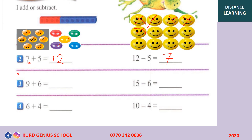We draw 9 circles: 1, 2, 3, 4, 5, 6, 7, 8, 9. Plus 6 — this time we add 6 more: 1, 2, 3, 4, 5, 6. Total: 1, 2, 3, 4, 5, 6, 7, 8, 9, 10, 11, 12, 13, 14, 15. So 9 plus 6 equals 15. Write 15 here.